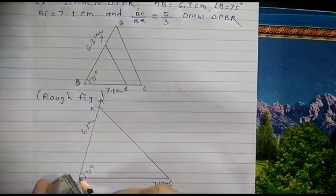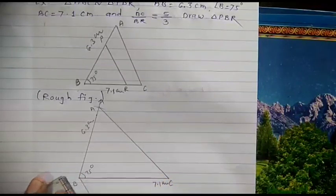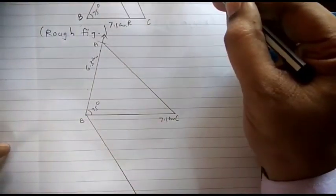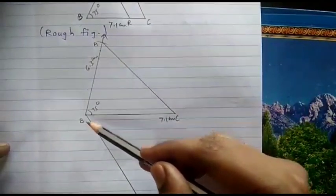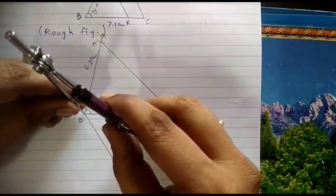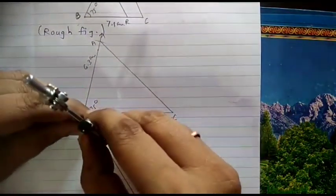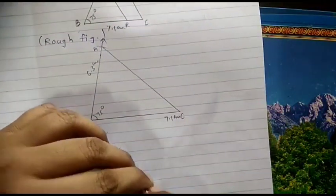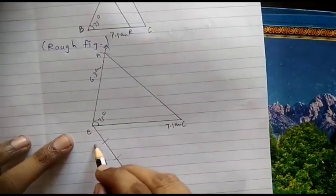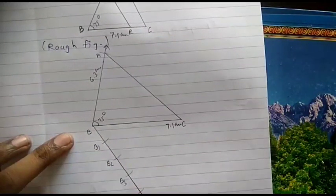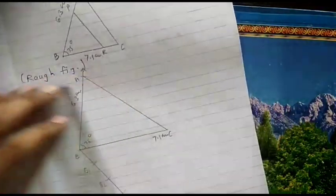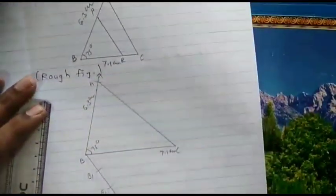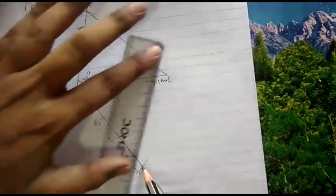Taking B as vertex, draw a ray making any acute angle. Since BC upon BR is 5 upon 3, the larger number is 5, so divide this ray into 5 equal parts: 1, 2, 3, 4, and 5. Label these B1, B2, B3, B4, and B5. Since BC is a multiple of 5, join B5 with C.